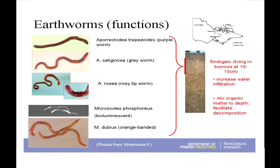In terms of what those dominant earthworms are doing, the top five — the purpleworm, greyworm, rosy tip, bioluminescent, and orange-banded worms — all occupy this zone in the soil. They're called endogeic, living in burrows around 10 to 15 centimetres. This explains a lot in terms of the harmful effects of tillage on these species. We don't have very many deep-burrowing earthworms in our systems, and we don't have a lot of litter-feeding species either. The message is there's probably lots of room for introducing or enhancing the earthworm communities.